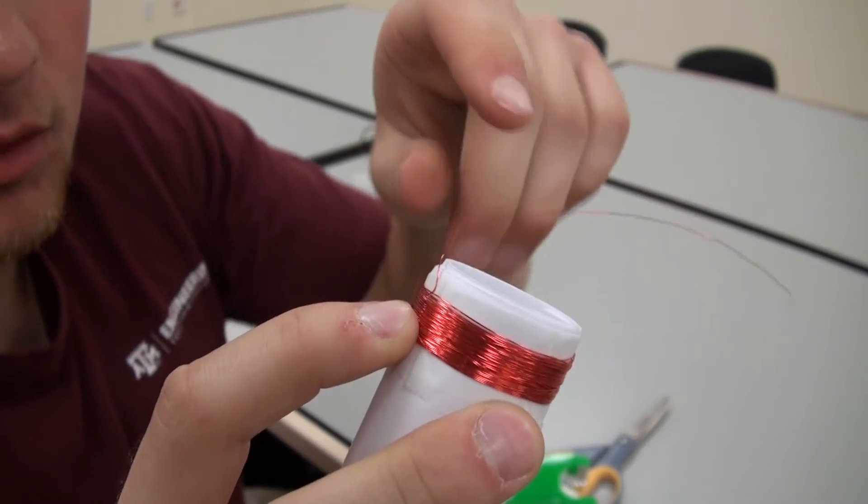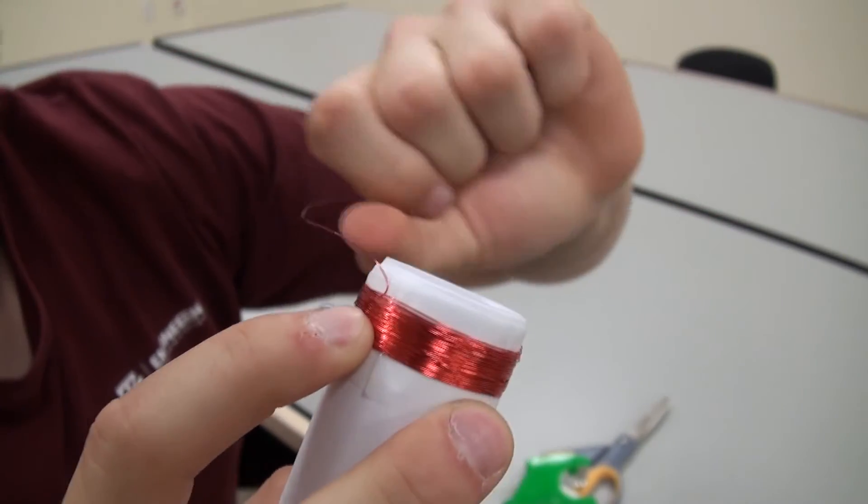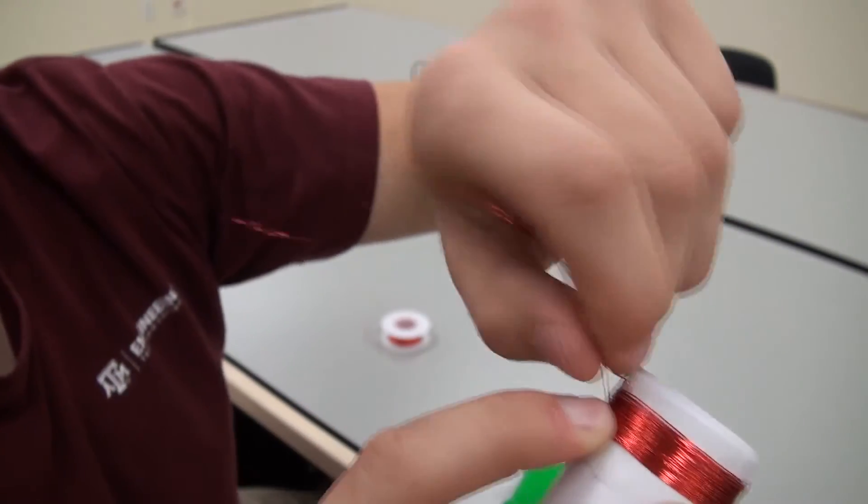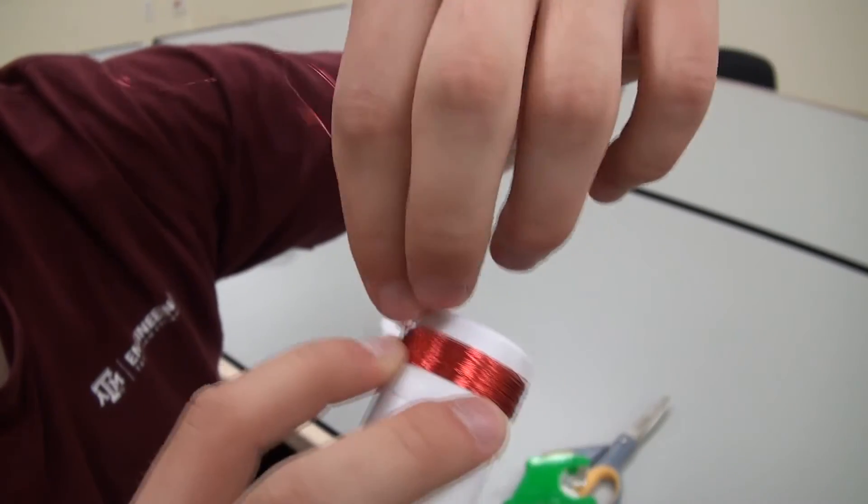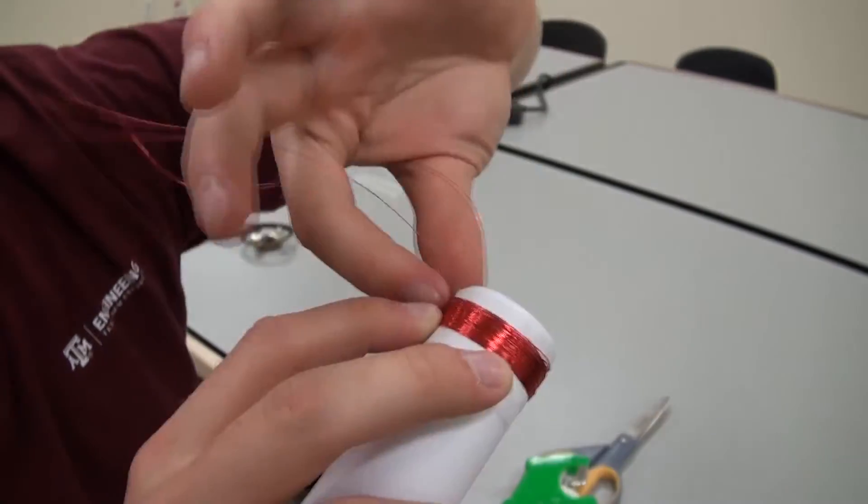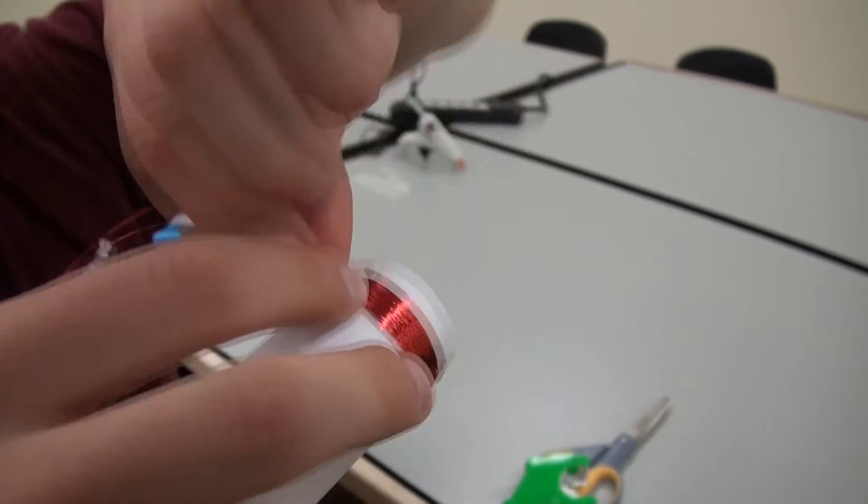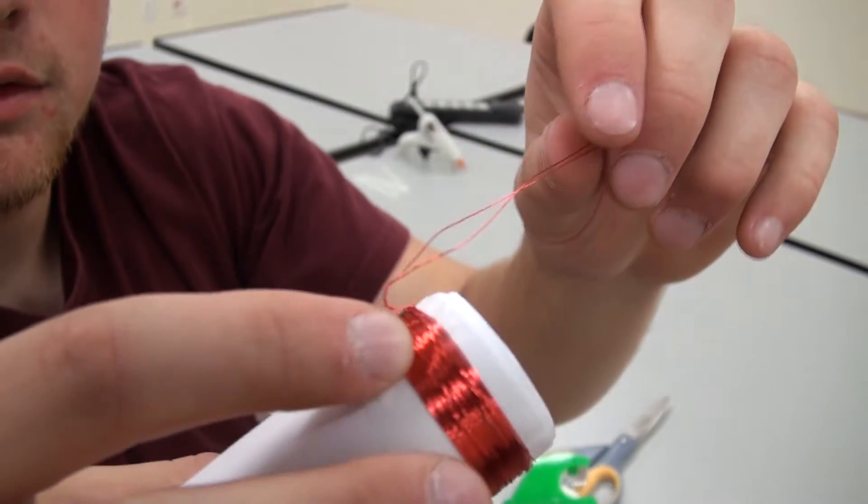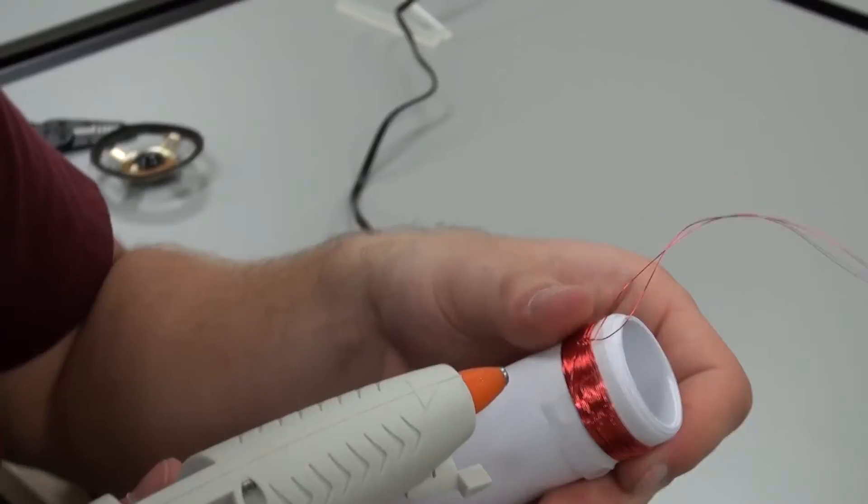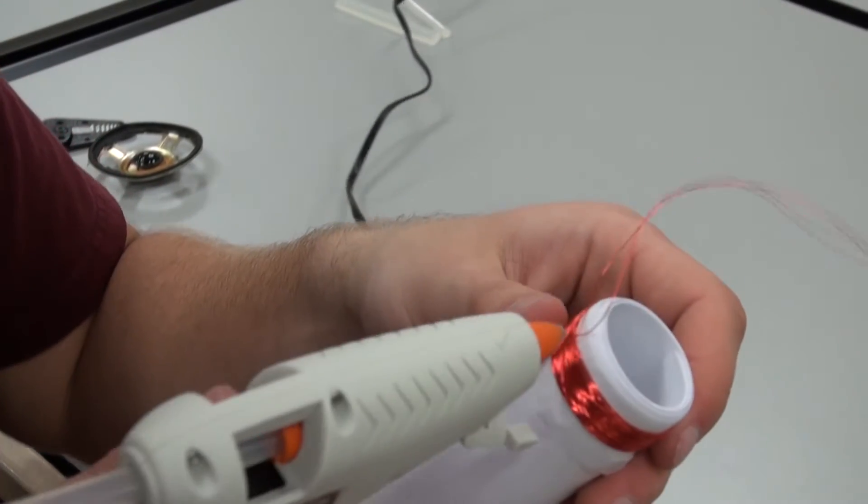Now that I have it wrapped, I'm going to tie both of the leads right here together, so that it holds them together. Now I'm going to hot glue the coil down to the paper.